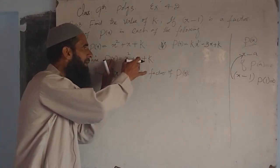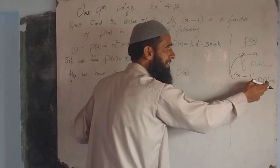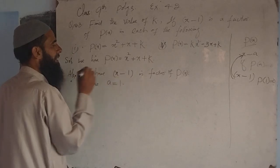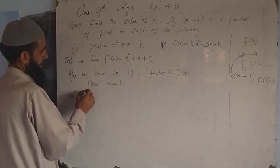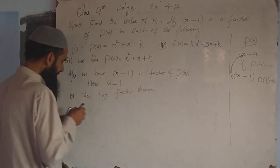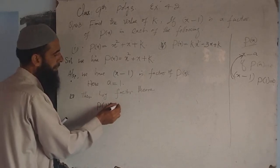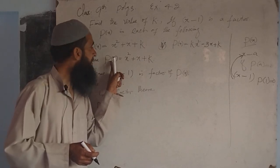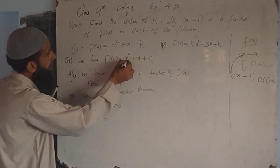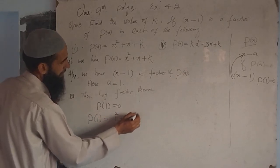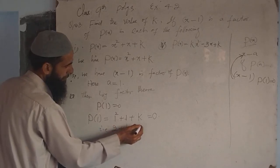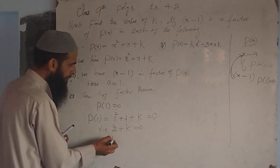Remember: x-1 is a factor of this polynomial, so by the Factor Theorem, p(1) = 0. Here, 1 comes from comparing x-a with x-1, giving a = 1. Now replacing x by 1 in the given polynomial: p(1) = 1² + 1 + k = 0, which gives 1 + 1 + k = 0, that is 2 + k = 0, so k = -2.